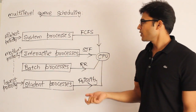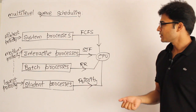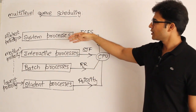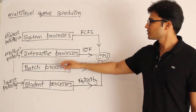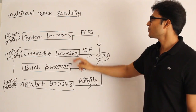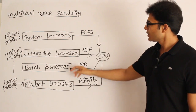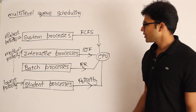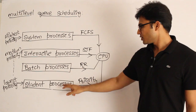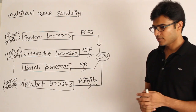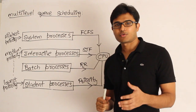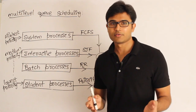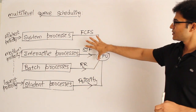One advantage of multi-level queue scheduling is that we can apply separate scheduling algorithms for various types of processes. For system processes we can apply FCFS, for interactive processes we can apply SJF, for batch processes we can apply Round Robin (RR), and for student processes we can apply priority scheduling. So for various types of processes we can apply various types of scheduling algorithms — that is the advantage.